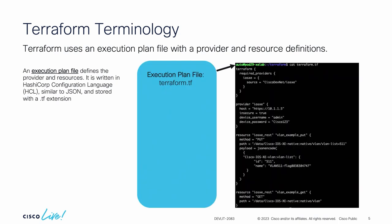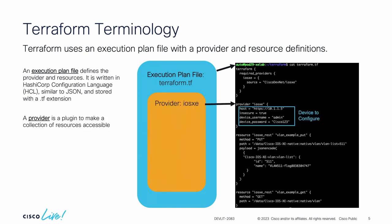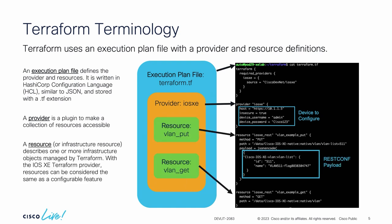Here's an example of what this could look like. In our execution plan file, we have a lot of different things going on. First, we have a provider — we're going to be using the IOS XE provider. Highlighted in this blue box, we're adding our device information: which device are we going to interface against? Here we're working with an IOS XE enterprise networking switch, and we have the credentials set. This is not best practice, but Terraform is really cool in that you can abstract away this information into different variables and different files so you're not storing credentials directly in the file.